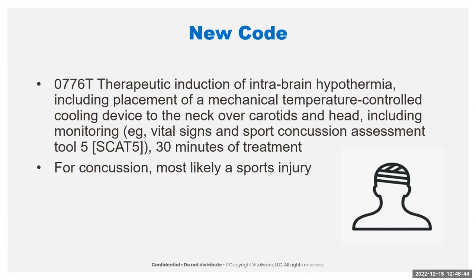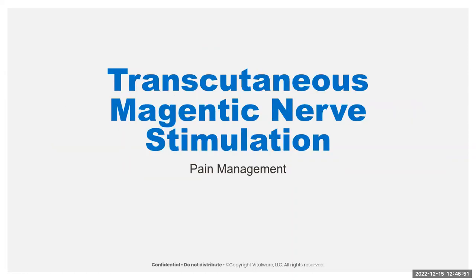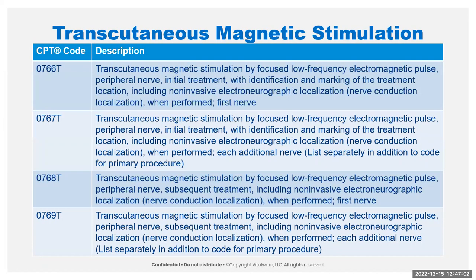With the transcutaneous magnetic nerve stimulation, you can use the magnetic stimulation to localize the nerve, the skin is marked, and then you provide that electric stimulation to effectively kill the nerves so the patient is not in as much pain.